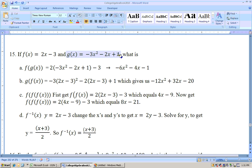So it will be 2 times this stuff, the -3x² - 2x + 1, then finish it off, -3. And if you simplify that, taking the -2 through and subtract 3, you'll get -6x² - 4x - 1.